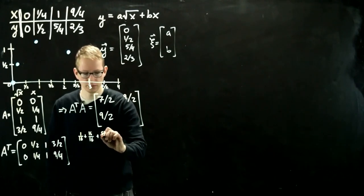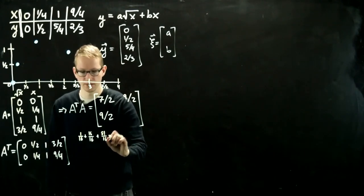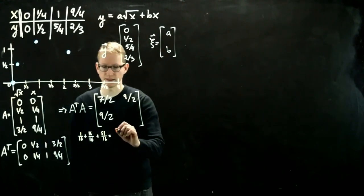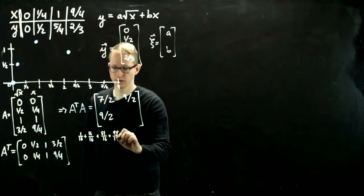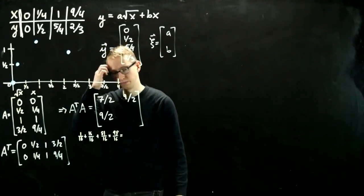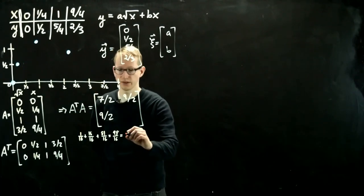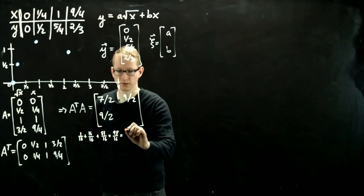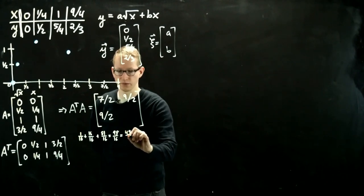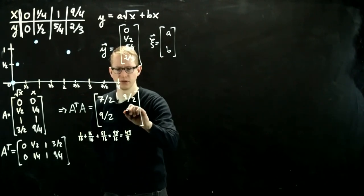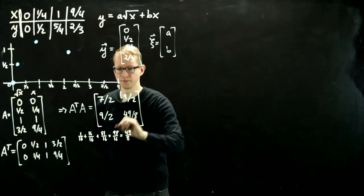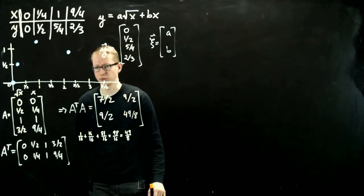Yes, 81 over 16. And this gives us 97, 98, 98 over 16. I don't know if 4 is a factor, probably not, 2 is a factor for sure. So this gives us 49 over 8. Unfortunately, that seems to be the best we can do. So this is A transpose A.